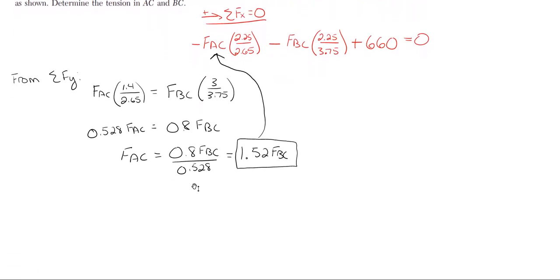Going to my X equation, plugging in 1.52 FBC into FAC up here, I have a minus. Don't forget the minus signs. It's usually where a lot of mistakes are made. So I have minus 1.52 FBC times that ratio of 2.25 over 2.65 minus FBC times its original ratio of 2.25 over 3.75. And then plus the 660 equal to zero.